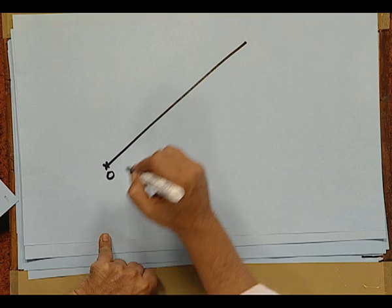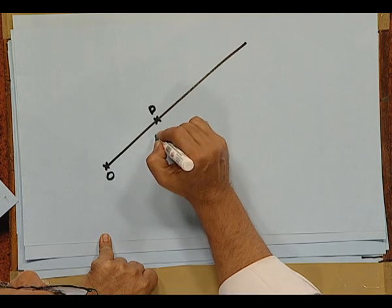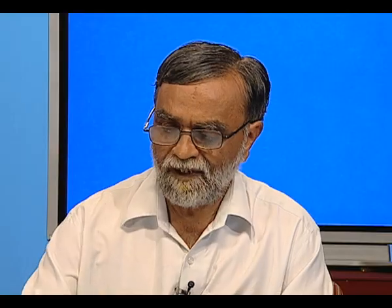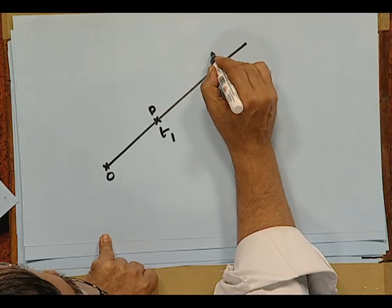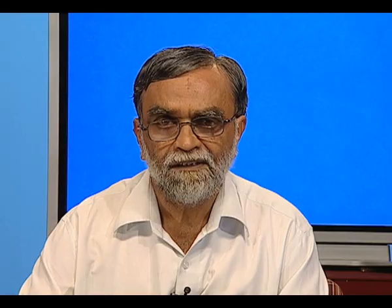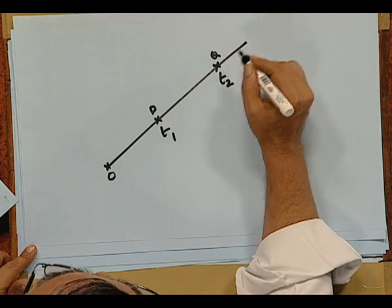let us say we have the origin which is represented by O in the figure. The object is at point P, at the location P, at a given time T1. The object is at another position Q, all along this line at time T2. The object goes on changing its position with respect to time, then we say the object is moving.